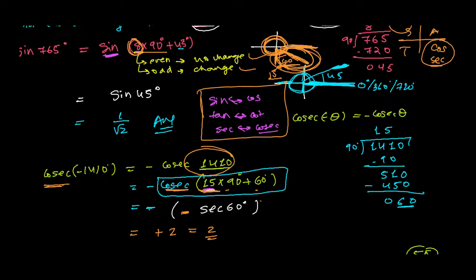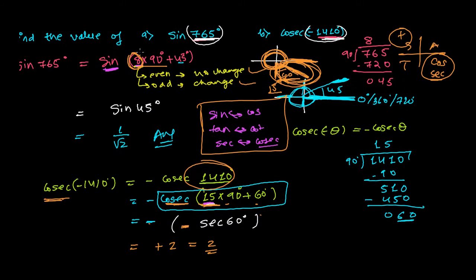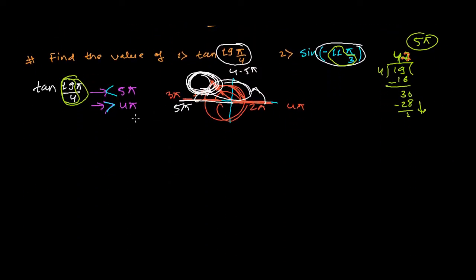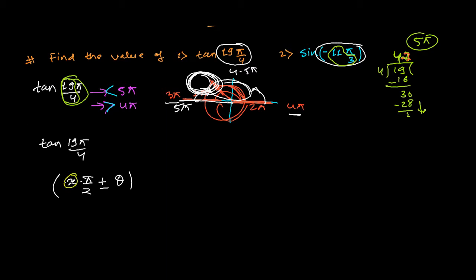As we did in the previous video, we need to write the angle in the form of (n · π/2) ± θ, where π/2 corresponds to 90 degrees in radian form. I need to represent 19π/4 in the basis of π/2. Once I write it in that form, I can determine whether the multiplier of π/2 is odd or even, and based on that decide whether the trig ratio changes or not.